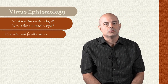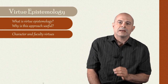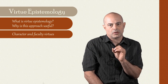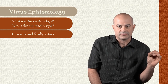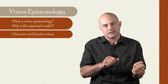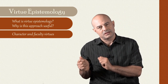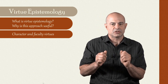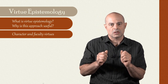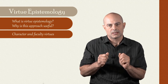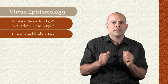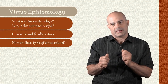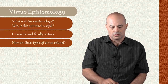In part two, I'm going to talk about two kinds of intellectual virtue. On the one hand, there are what virtue epistemologists call character virtues, and on the other hand, there are what we call faculty virtues. It's important to get clear on this distinction, so I'm going to talk about that in part two. Then in part three, we'll look at how the two kinds of virtue are related.